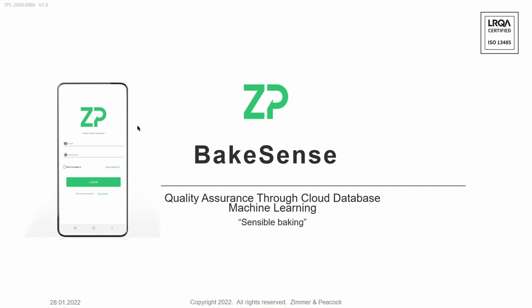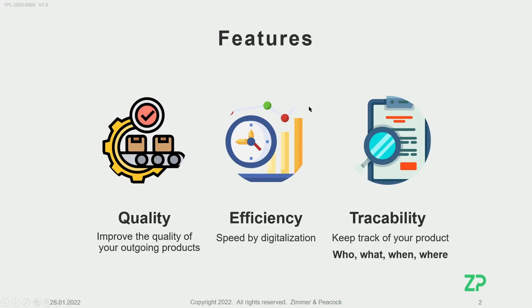Here on the left you can see a little snippet of our app. Here at Simran Peacock, we have developed quality, efficiency, and traceability through an app that allows you to improve the quality of your outgoing products.